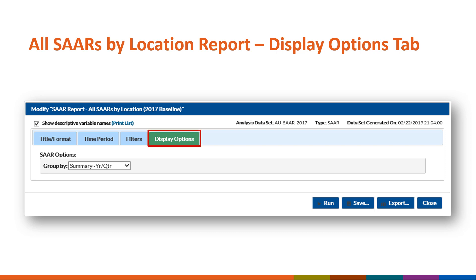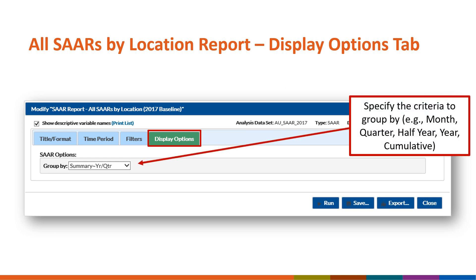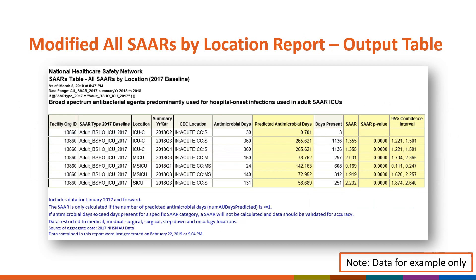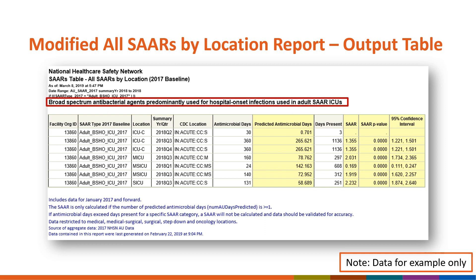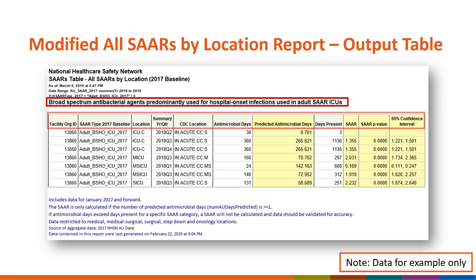On the Display Options tab, we can select the time period used to group the data. SARs can be generated by month, quarter, half-year, year, or cumulative time periods. Let's group the SAR by quarter. Select Summary Year/Quarter in the drop-down menu. Click the Run button at the bottom of the Modification screen to generate a report with the specified modifications. Based on our modifications, the output has one table for the BSHO SAR in adult ICUs during 2018. Please note that the column headers have descriptive variable names and the data are grouped by quarter.